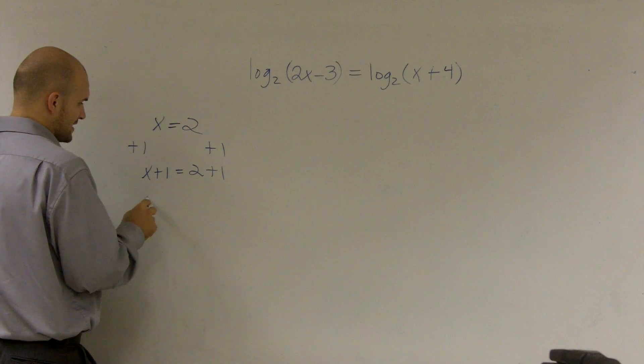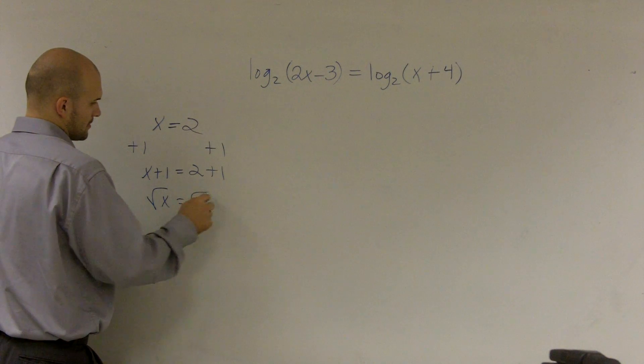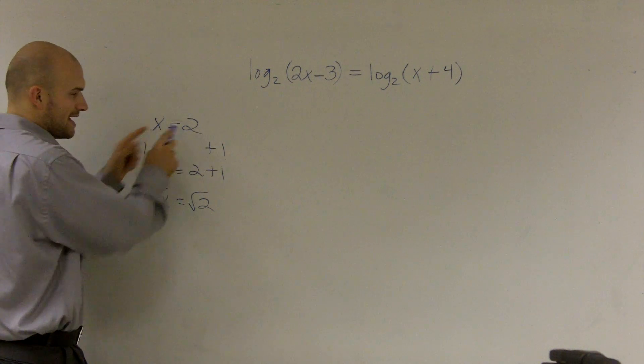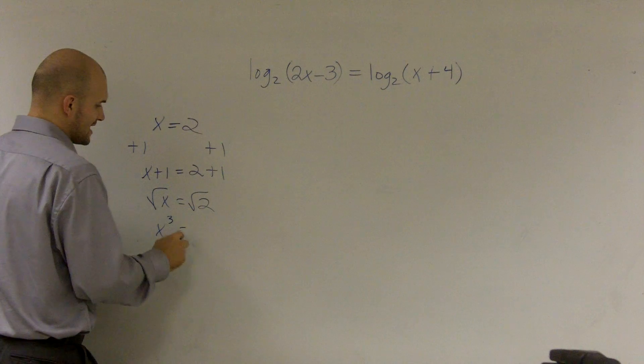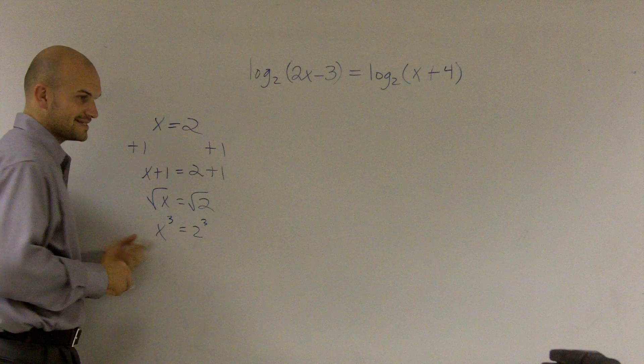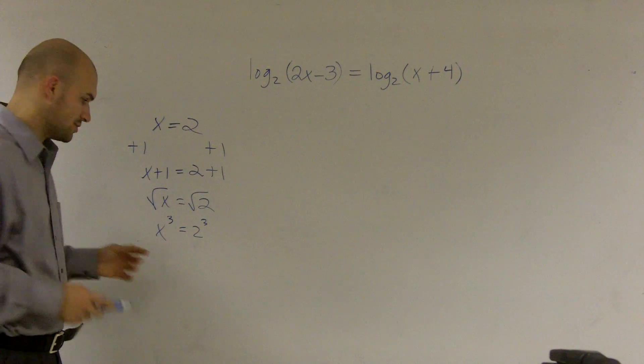You can take the square root of both sides. Still, x has to equal 2. You could cube both sides, and still x has to equal 2.